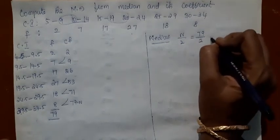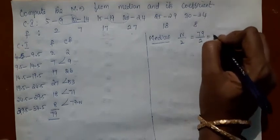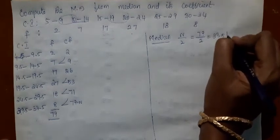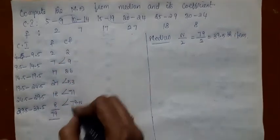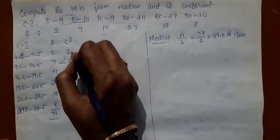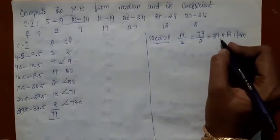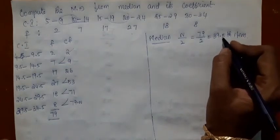Sorry. Yes. 79 divided by 2. That is 39.5 th item. In the CF column, leave all the values which are less than 39.5. You need 39.5 th position.